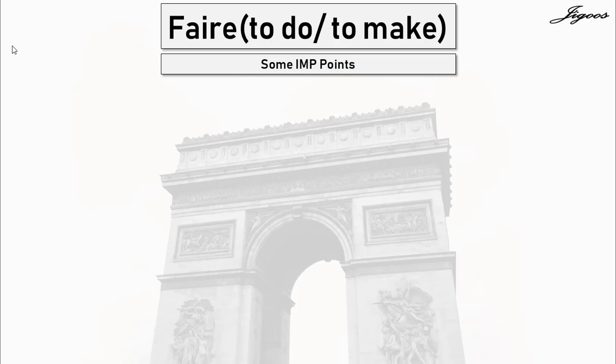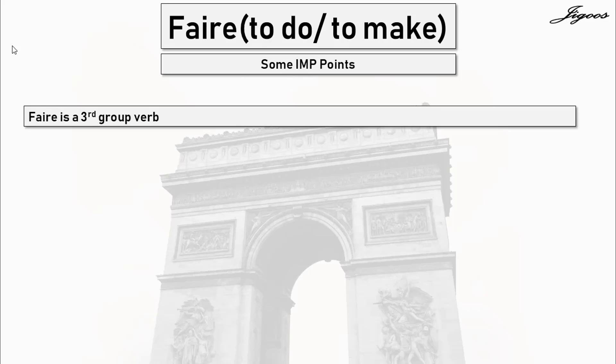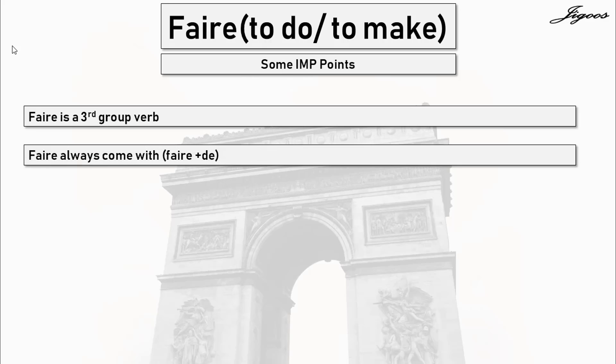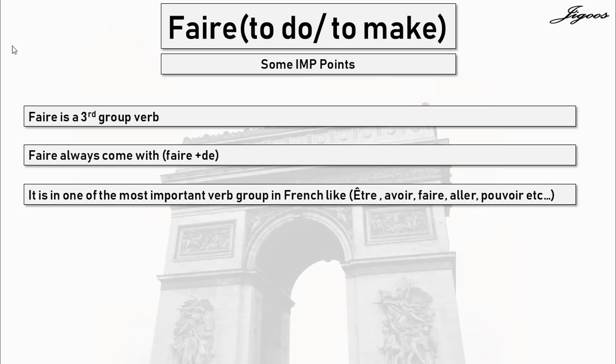Now let's look at some important points related to the faire verb. Faire is a third verb group, so you must remember all the conjugation of the faire verb by heart. Faire always comes with 'de' — that is, faire plus de. Remember that point. It is one of the most important verbs in French.